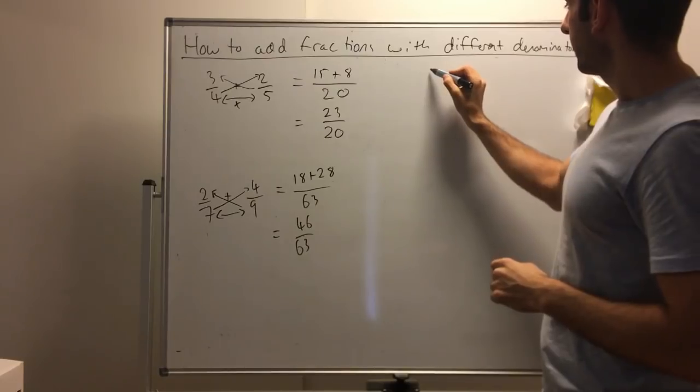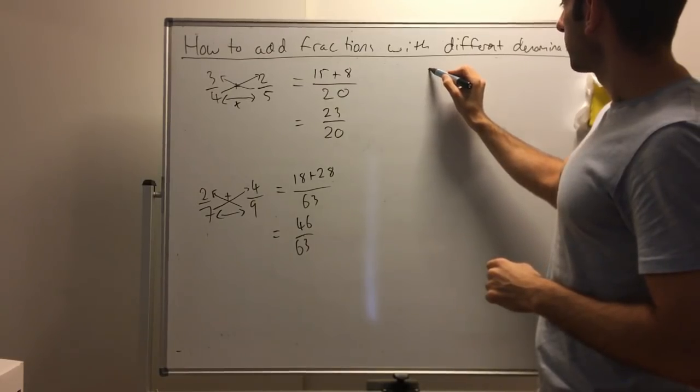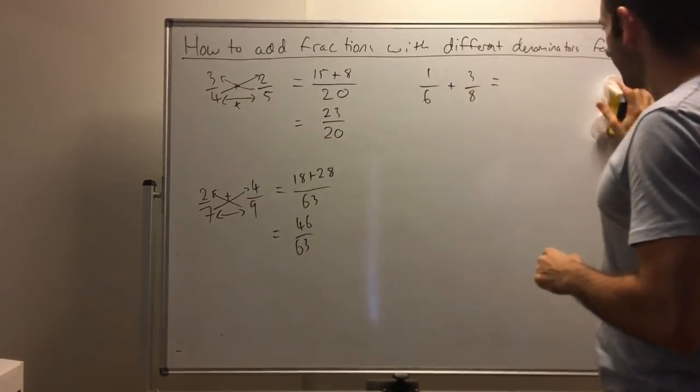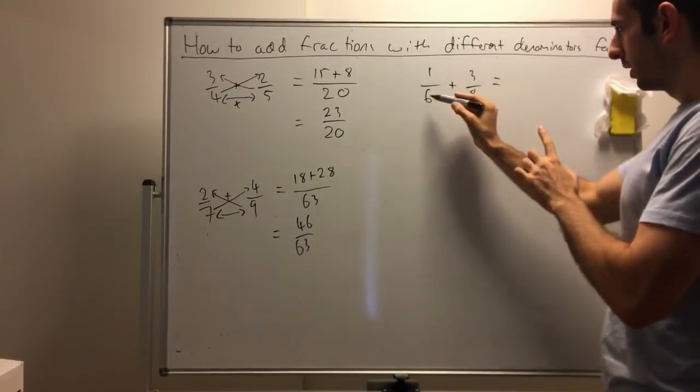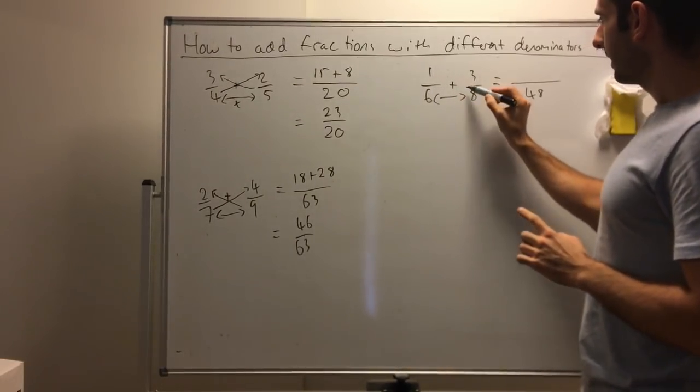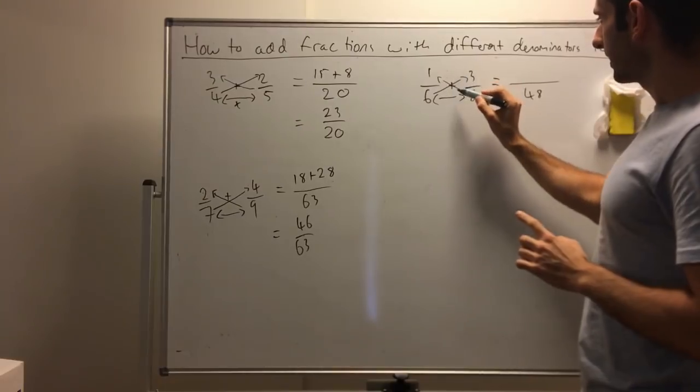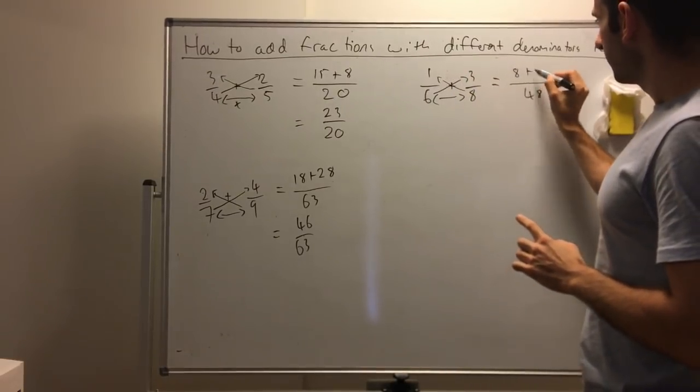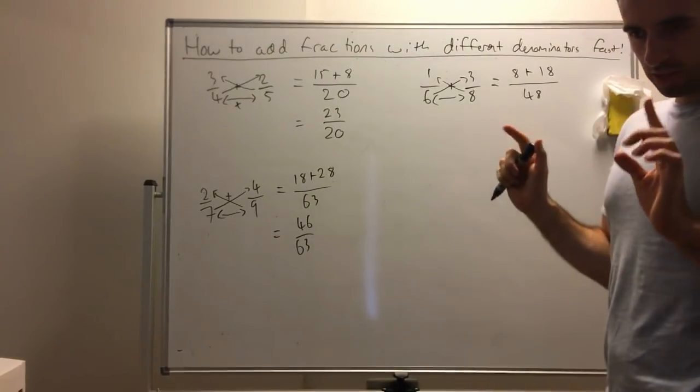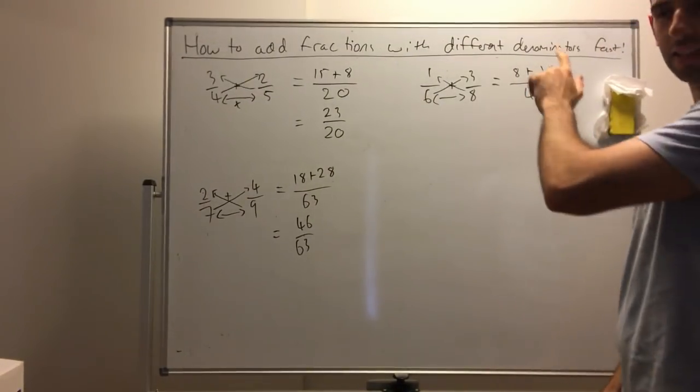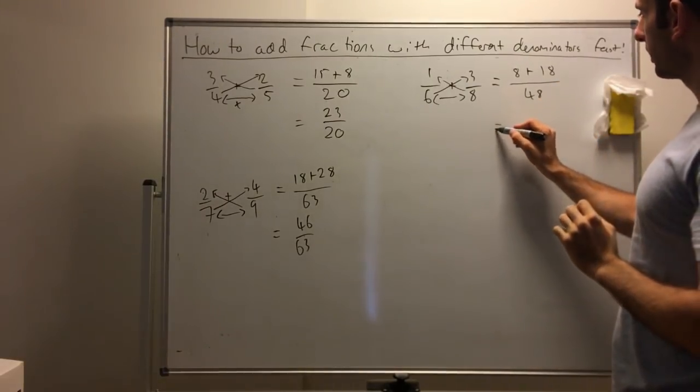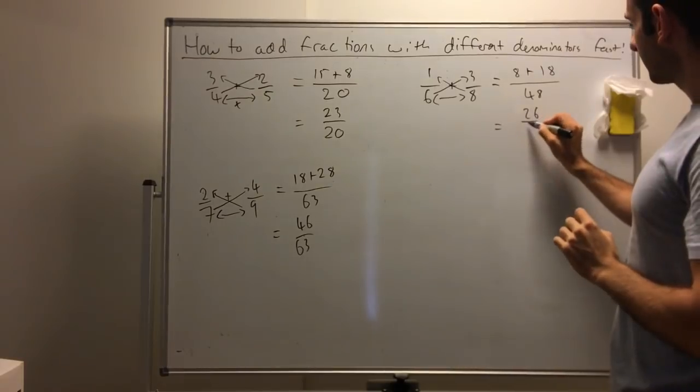Let's look at 1 on 6 plus 3 on 8. If we use cross-multiply, times the 6 and the 8, so 48. Cross the numbers together: 1 times 8 is 8, 3 times 6 is 18. I'm going to show you a different trick. You could just add the fractions and then divide it out. So that's 26 on 48.